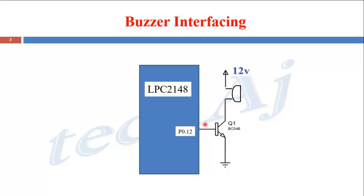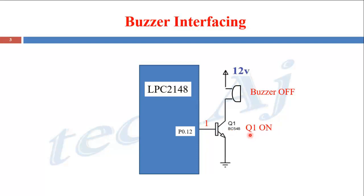To make the transistor ON and OFF, we apply logic level 0 and 1 at the base of the transistor. Whenever the base is at logic level 0, the transistor is in OFF condition, acting as an open circuit, so the ground is disconnected and the buzzer is OFF. When the base is at logic level 1, the transistor turns ON, acting as a short circuit, connecting ground to the buzzer and turning the buzzer ON.